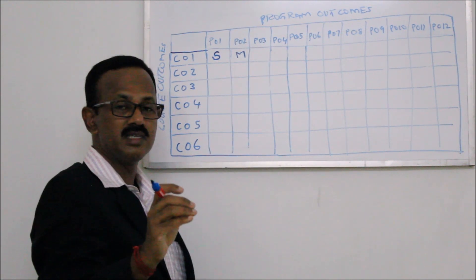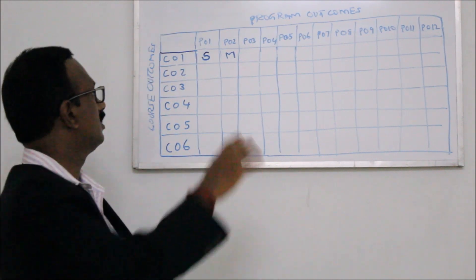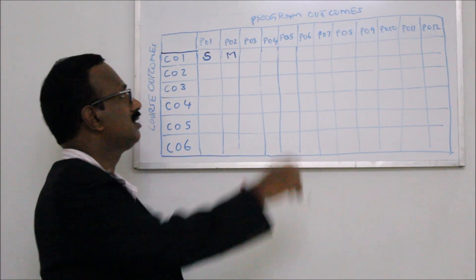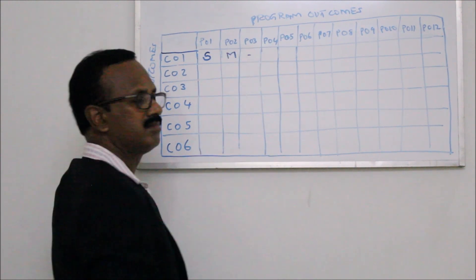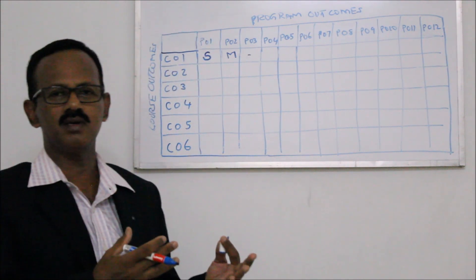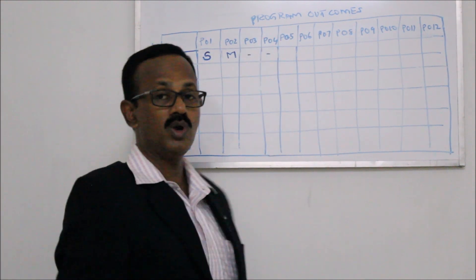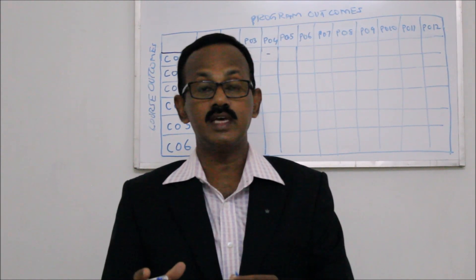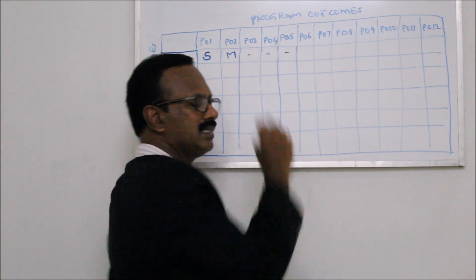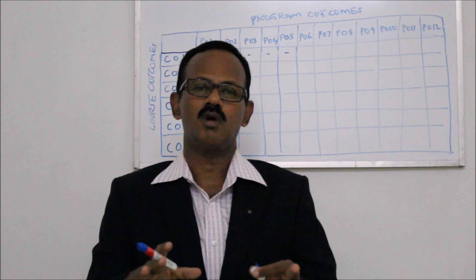Course outcome 1 covers engineering knowledge, problem analysis, and the third one — design and development of solutions — I am just leaving it blank. For the fourth, investigation: if this course outcome has something to do with investigation, I will put strong or medium depending on the college, but if there is nothing like that, I will just leave it blank. For the fifth, if course outcome 1 deals with modern tool usage related to that particular course, I will put strong, moderate, or weak. But here I will put a dash, making an assumption that course outcome 1 does not have anything to do with program outcome 5, which is modern tool usage.